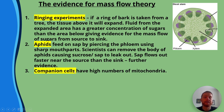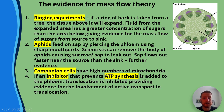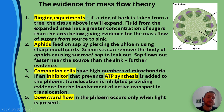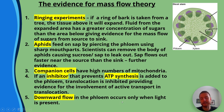Companion cells have high numbers of mitochondria. Fourth, if an inhibitor that prevents ATP synthesis is added to the phloem, translocation is inhibited — proving evidence for active transport in translocation. Finally, downward flow in the phloem occurs only when light is present, because we need light to make sugar and to synthesize ATP.